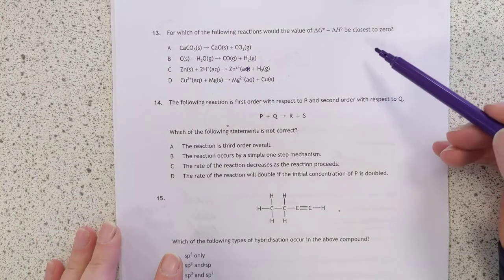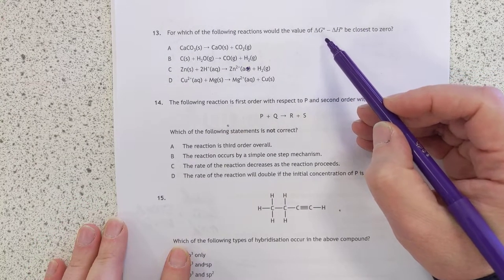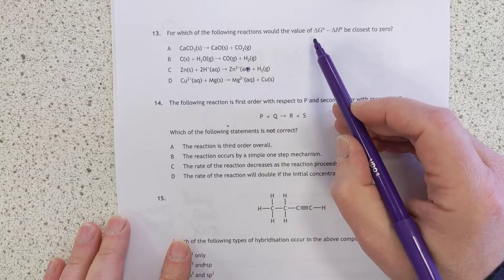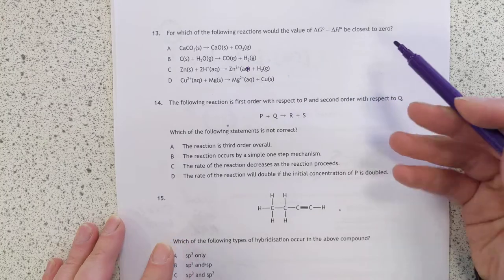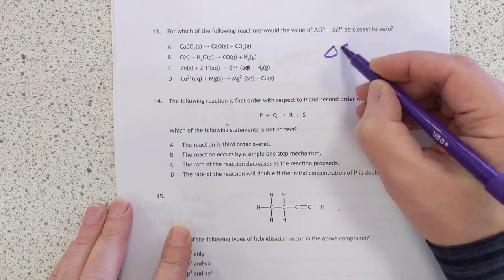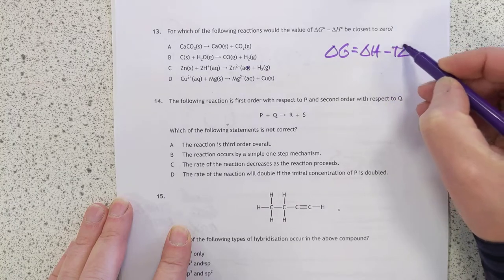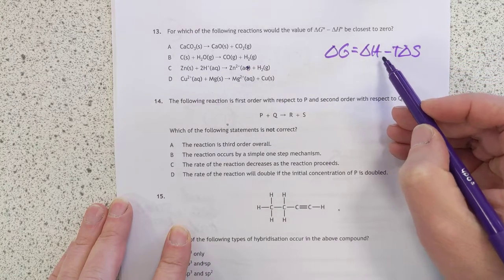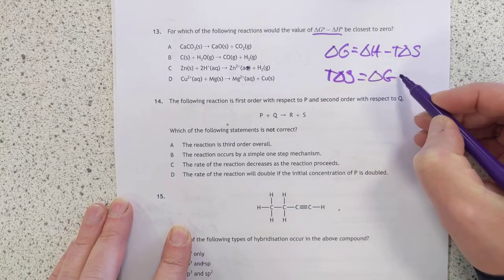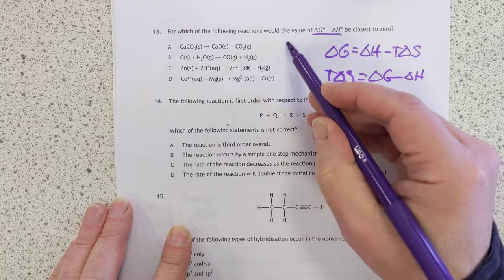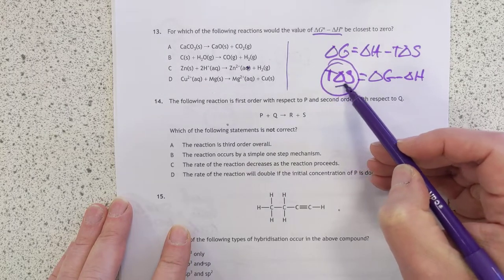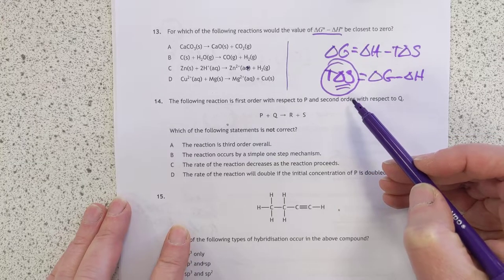For which following reactions would the value of delta G minus delta H be closest to zero? Apparently an impossible question, until you have a think about what this would actually be. Delta G equals delta H minus T delta S. So if you rearrange this to get that expression there, you find T delta S equals delta G minus delta H. So they're looking for which reaction here would have this value here closest to zero.